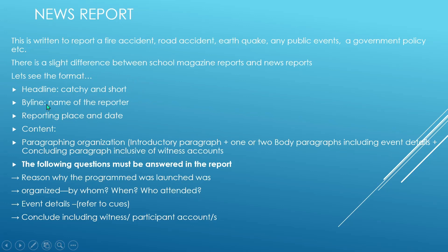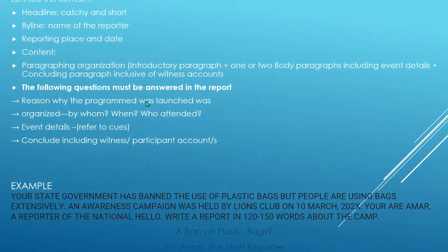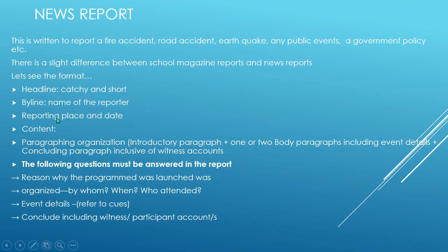The first element is the headline, the second is the byline — the name of the reporter. Then comes the difference: in news reports you include the reporting place and date. That is the key difference. All other details follow the same three-paragraph format: an introductory paragraph, one or two body paragraphs with event details, and a concluding paragraph that includes witness accounts.